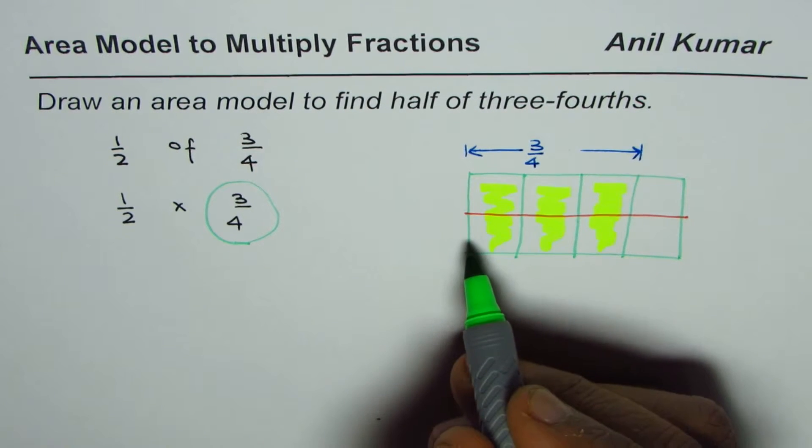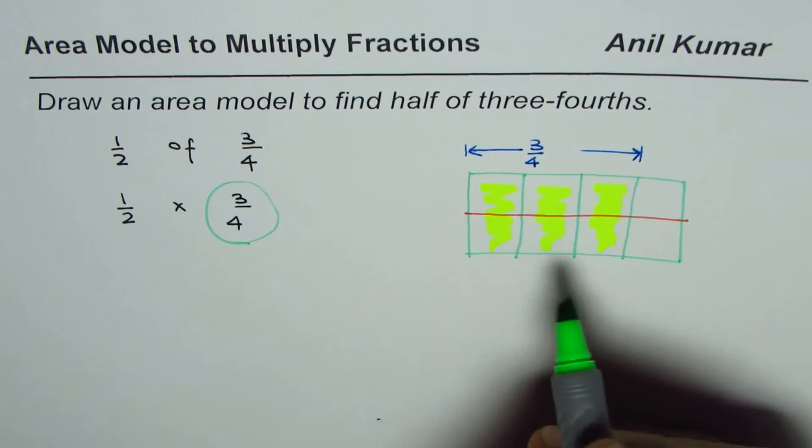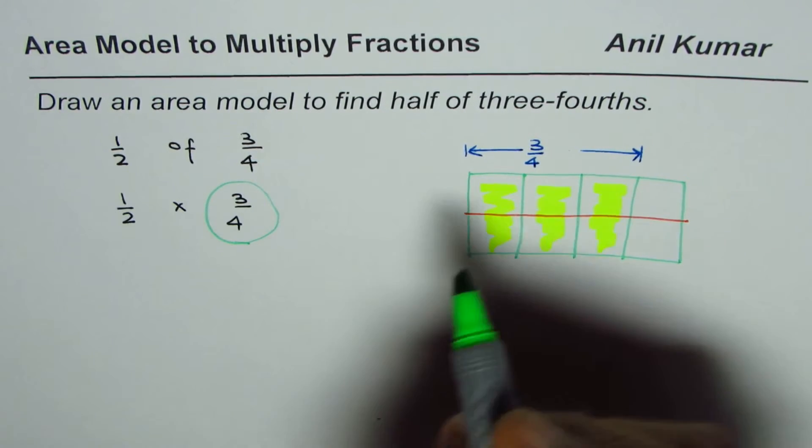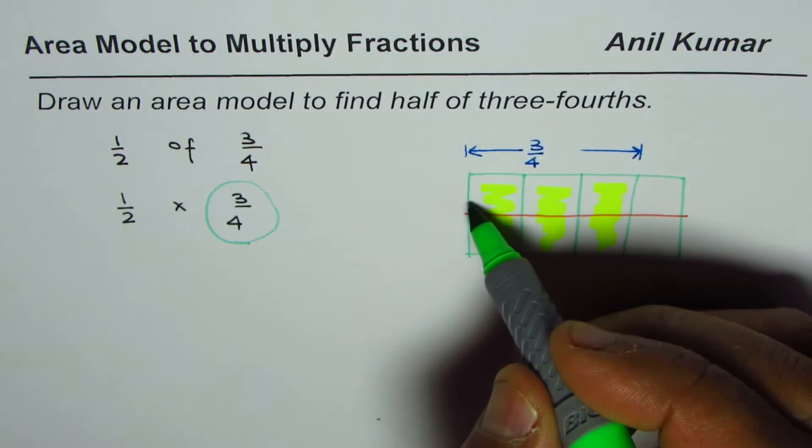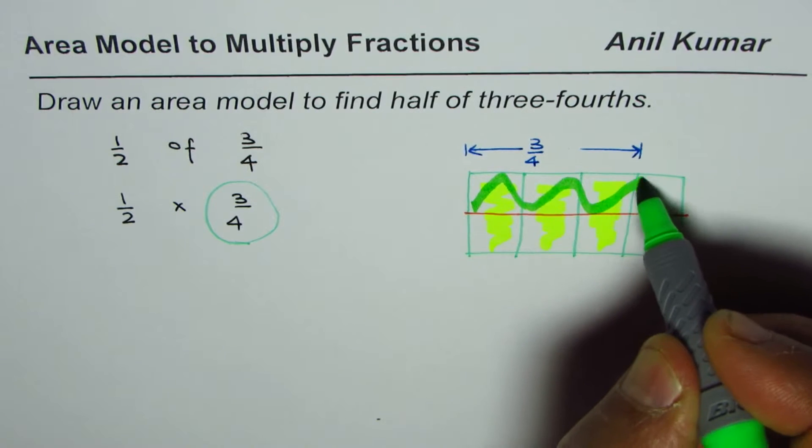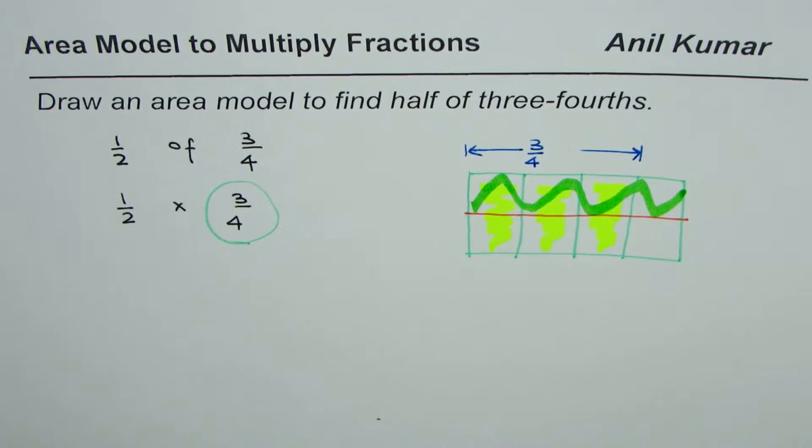So there are two rows now. As you can see, we have two rows. We need to select just one of them. So one of them could be like this. Do you see that?